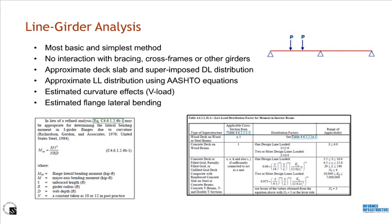There are three main types of analysis used for bridges. The first is line girder analysis — the most basic and simplest method. Only one-dimensional beam elements are defined to represent a single girder. There is no interaction with the rest of the bridge, such as cross-frames, bracing, or other girder elements. Superimposed dead load distribution is an approximation, and different states have different policies for distributing superimposed dead loads. Live load distribution is approximated using live load distribution factors. Since the girder is modeled as a one-dimensional member, curvature effects and flange lateral bending values are estimated using approximate equations.